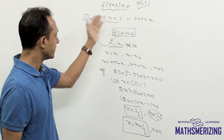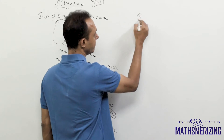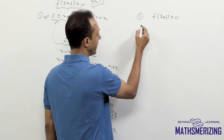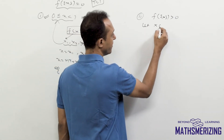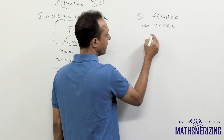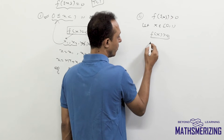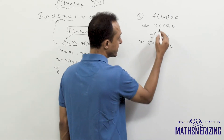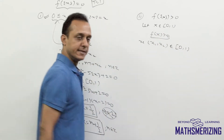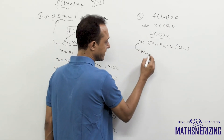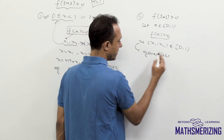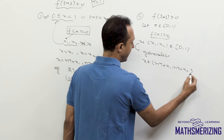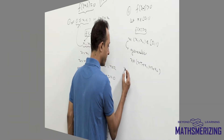In the same way, we can solve inequalities using this periodic property. Suppose I have an inequality involving the fractional part of x, greater than 0. What I'll do is let x belong to [0, 1), solve the condition, get a result such as x ∈ (x1, x2), where the result must lie within [0, 1), and then generalize it: x ∈ (n + x1, n + x2).